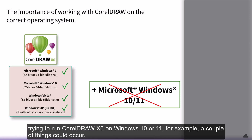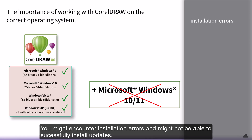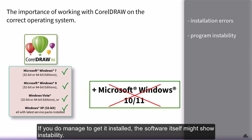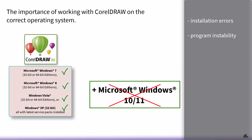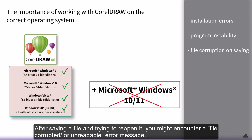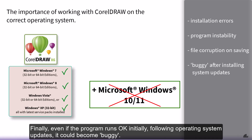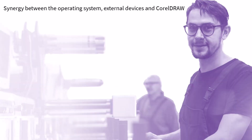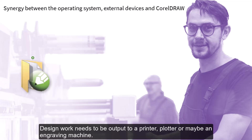If you're running an older CorelDraw Graphics Suite on a system it wasn't written for — trying to run CorelDraw X6 on Windows 10 or 11, for example — a couple of things could occur. You might encounter installation errors and might not be able to successfully install updates. If you do manage to get it installed, the software itself might show instability; after saving a file and trying to reopen it, you might encounter a file corrupted or unreadable error message. Finally, even if the program runs okay initially, following operating system updates it could become buggy.